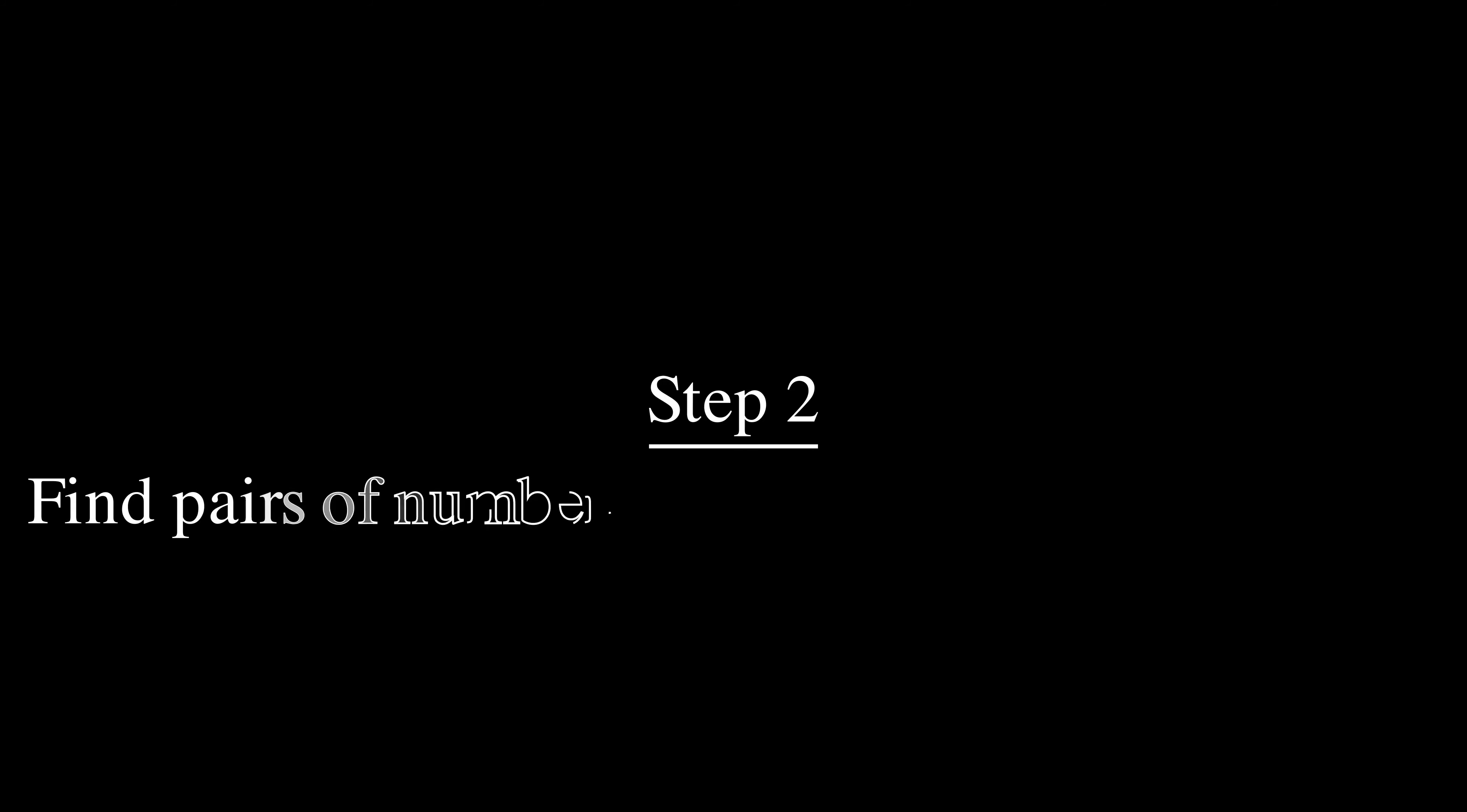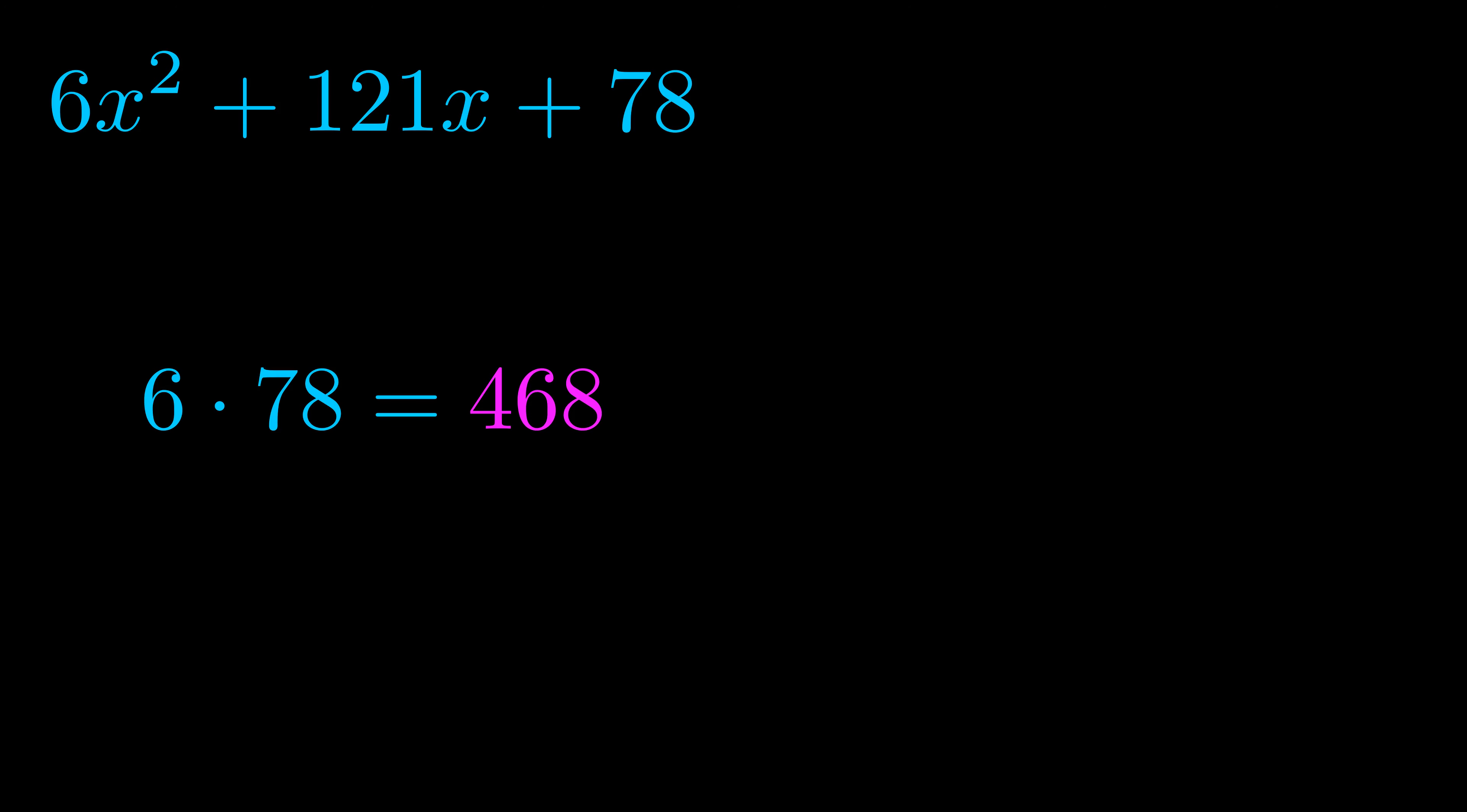Step two is to try to find all of the pairs which multiply to this number. Now it turns out you don't really need to find all of them, but go ahead and write down as many numbers as you can that multiply to the magenta value for now. Pause the video and resume when you're ready to continue. Okay, here's what I came up with.